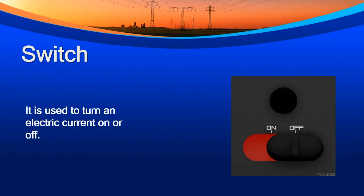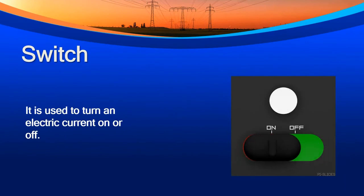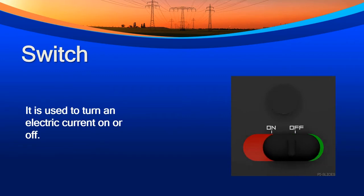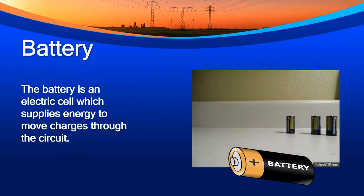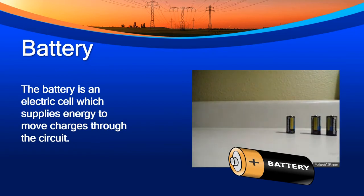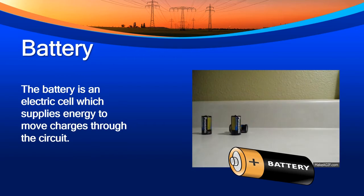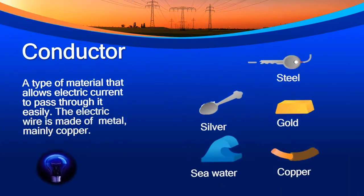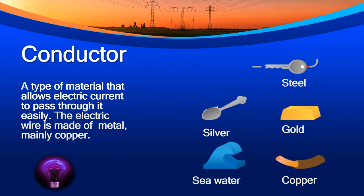Switch: it is used to turn an electric current on or off, as you can see in the diagram. Battery: the battery is an electric cell which supplies energy to move charges through the circuit. Conductor: a type of material that allows electric current to pass through it easily. The electric wire is made of metal, mainly copper. Here are some types of conductors: steel, silver, gold, seawater, and copper.